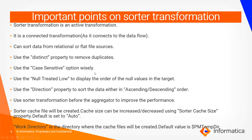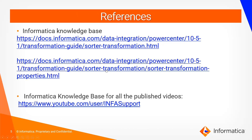Use the Distinct property to remove duplicates, and use Case Sensitive wisely based on your requirement. Use Null Treated Low to control the order of null values in the target. The Direction property lets you set ascending or descending order. Use the Sorter transformation before the Aggregator to improve performance — sorting data before passing it to the Aggregator is recommended. The Sorter cache file size can be increased or decreased; the default is Auto. The Work Directory default is the PowerCenter temp directory.